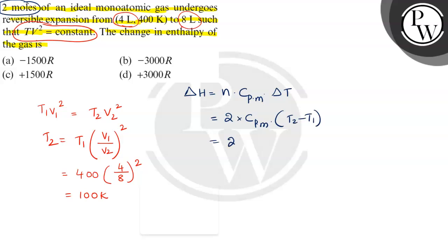What is T2? T2 is 100. 100 minus initially T1 which is 400. So 400.